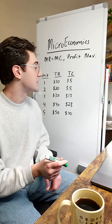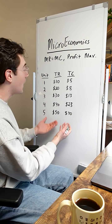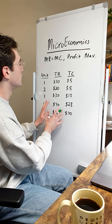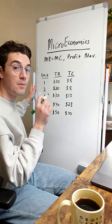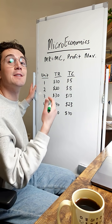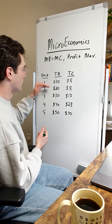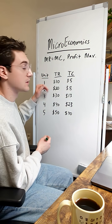With that being said, let's first start by calculating the marginal revenue and marginal cost values from these totals. All that marginal means is change, so we're just going to take the current unit and subtract from it the previous.